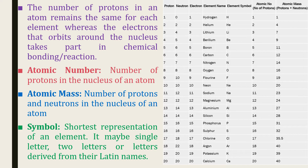For some elements, the first two letters from their names are used as symbols — for example, helium: He, and beryllium: Be. For some other elements like magnesium, the first letter and third letter are used — Mg is the symbol for magnesium.